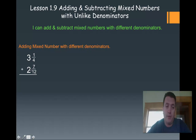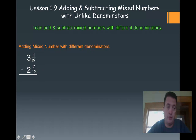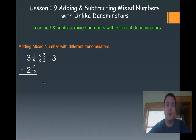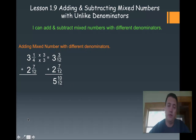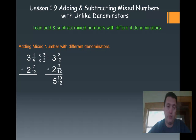I look at this fraction and I realize right away that 4 is a factor of 12. Now you could multiply these to get 48, but I realize I don't have to make my fraction that big. So I'm just going to multiply the numerator and denominator by 3. That gives me 3 and 3 twelfths plus the original 2 and 7 twelfths. When I add the fractions I get 10 twelfths, and the whole number gives me 5. But this is not in simplest form. I know 2 is a factor of both, so if I divide that down, I get 5 and 5 sixths as my final answer.